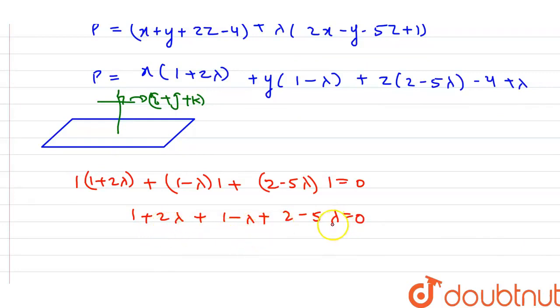2 lambda minus lambda minus 5 lambda, so minus 4 lambda, and 2 plus 1 plus 2 equals 4. So minus 4 lambda plus 4 equals 0, therefore lambda is equal to 1.